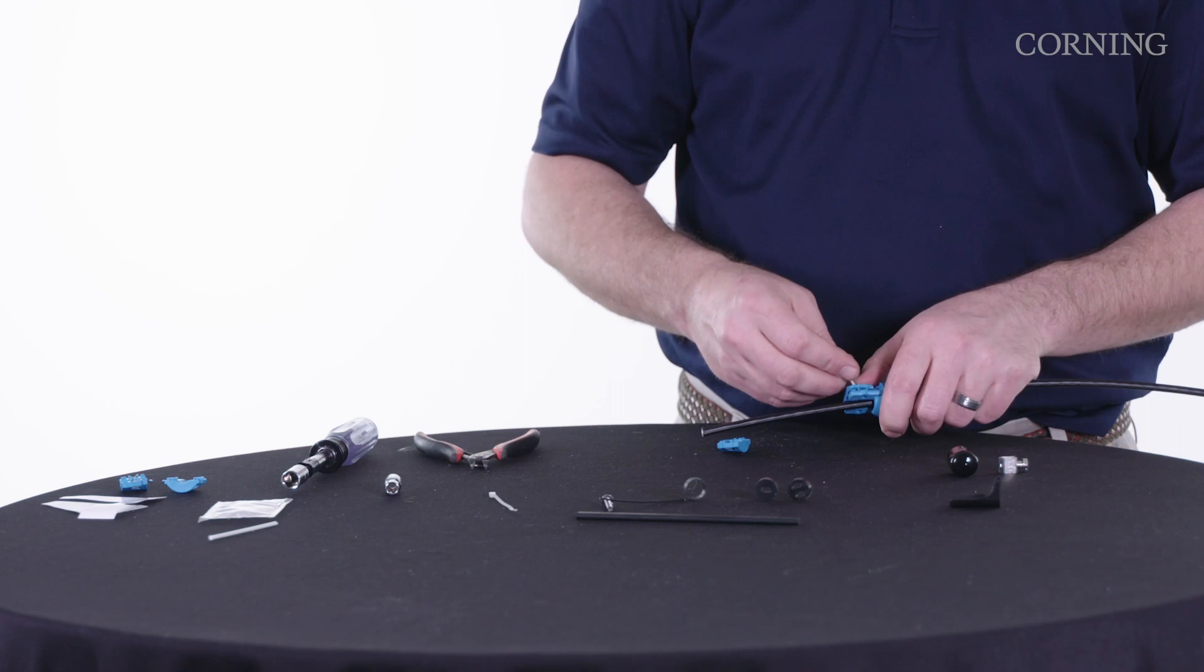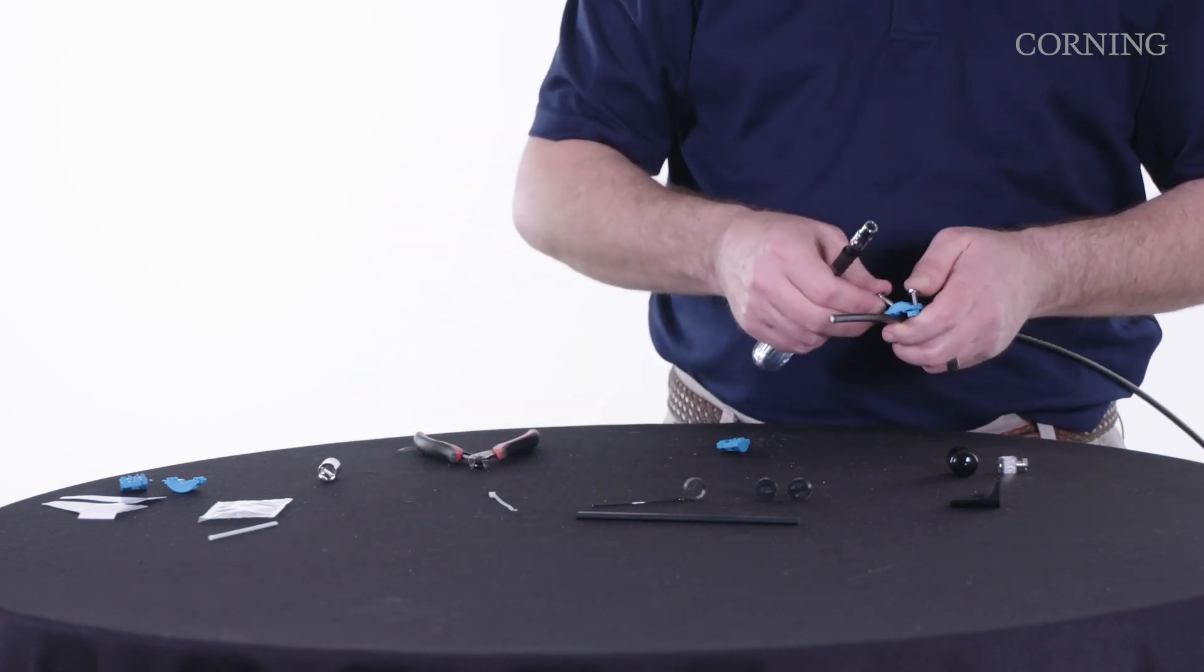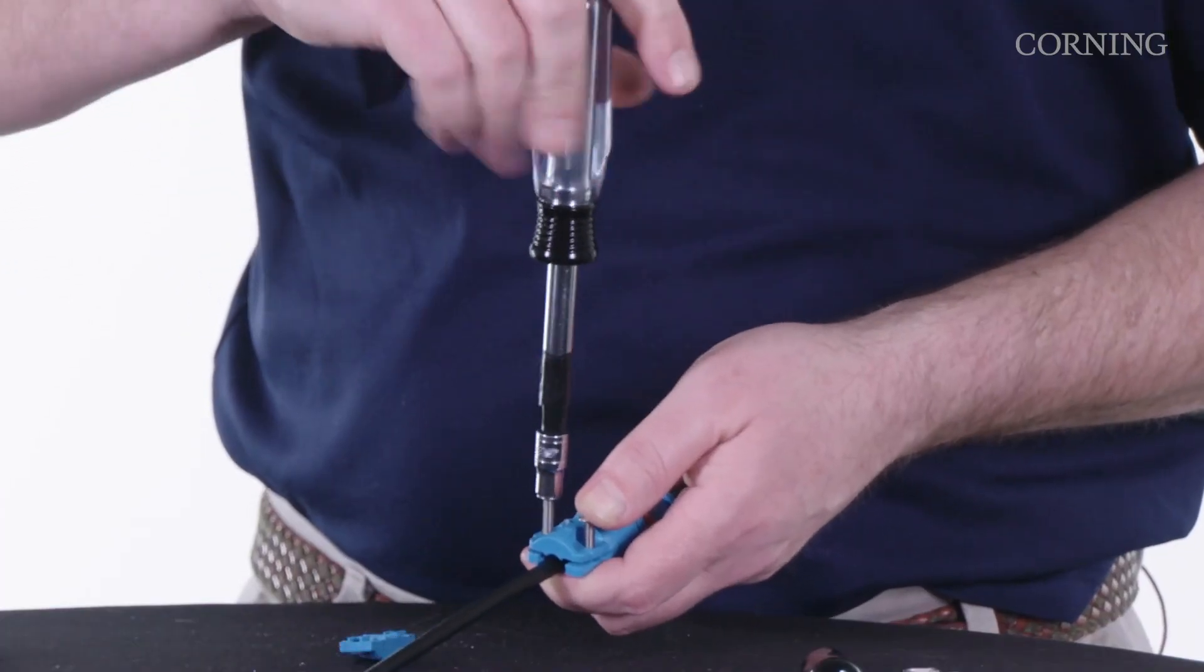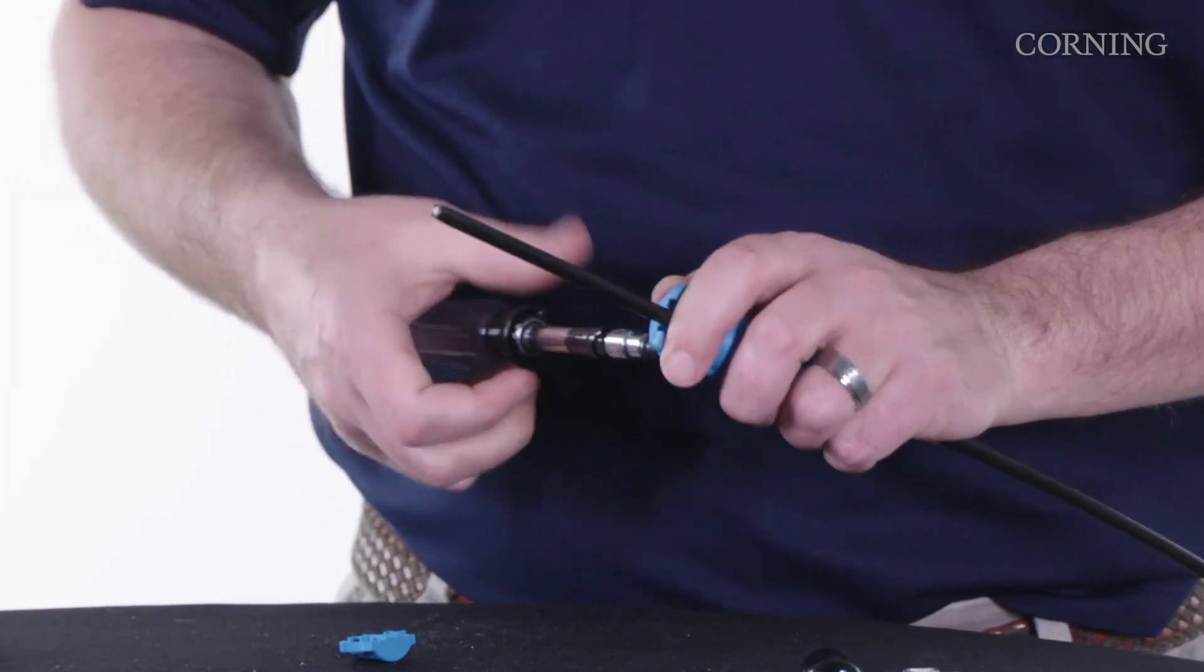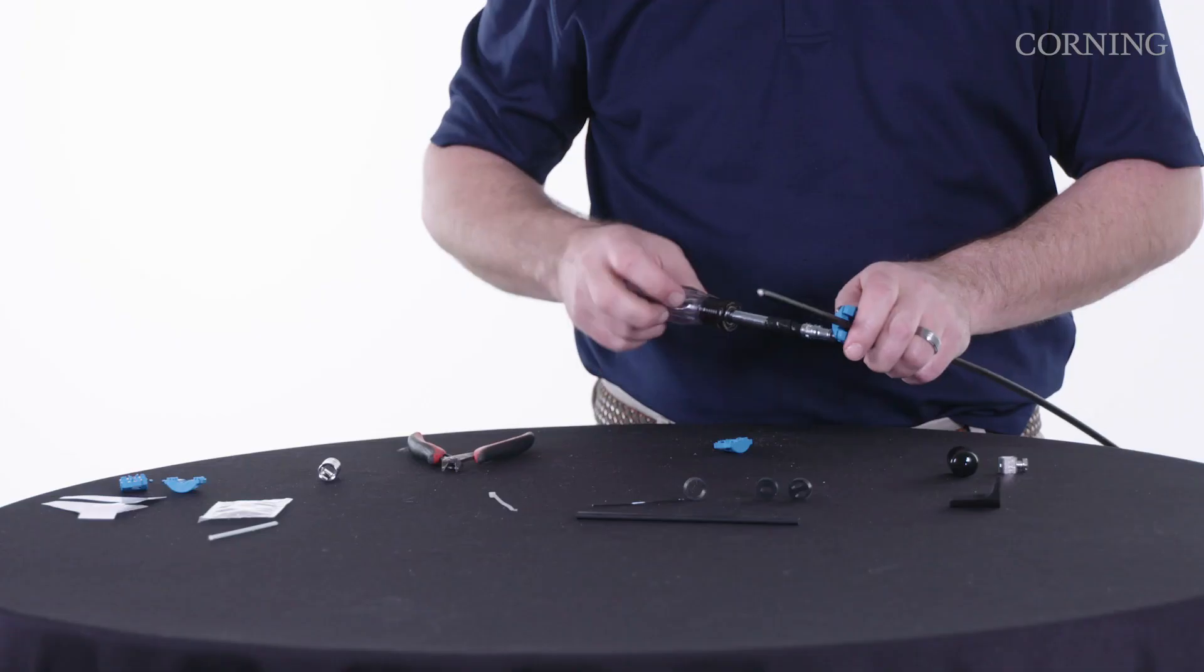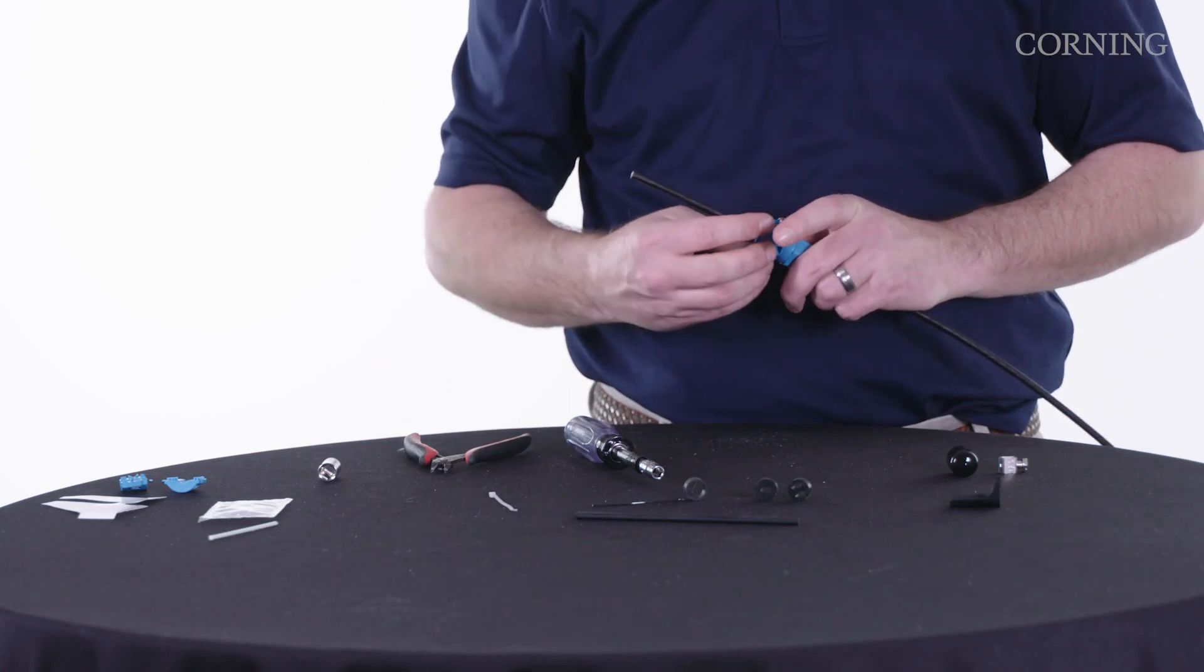One side of this is threaded, the other side is not, so obviously I'm going to put the non-threaded side first, and then put this other side and make sure you get the square end towards the e-cam.